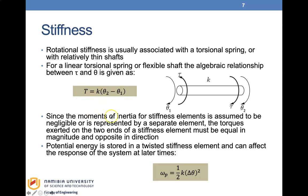Since the moment of inertia for stiffness elements is assumed to be negligible, the torques exerted on the two ends of a stiffness element must be equal in magnitude and opposite in direction. Potential energy is stored in a twisted stiffness element and can affect the response of the system at a later time.